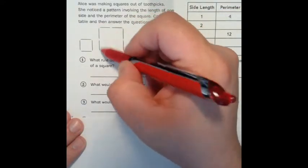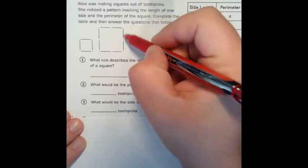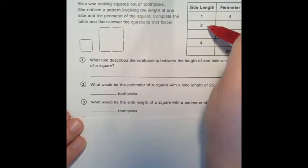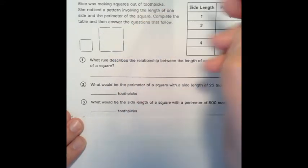So she has another square here out of toothpicks. And this time each side has two. So the side length is two. So the perimeter would be one, two, three, four, five, six, seven, and eight.